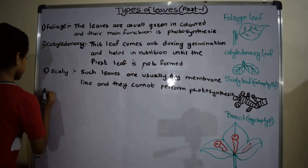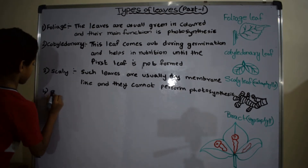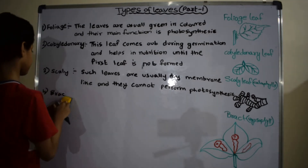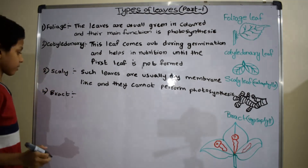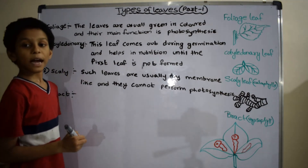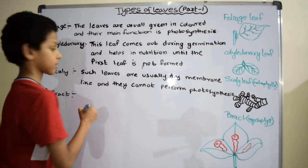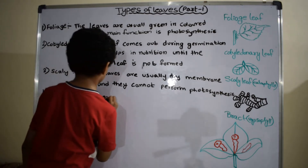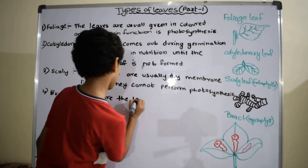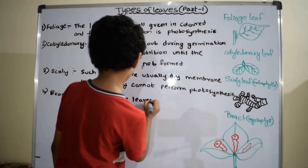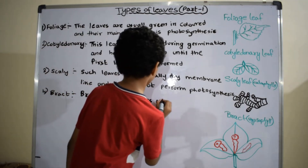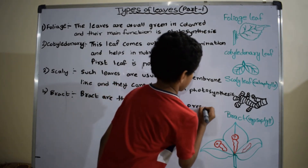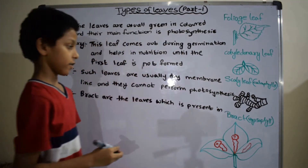Fourth one is bract. Bracts are the leaves which are present in the flower axis.